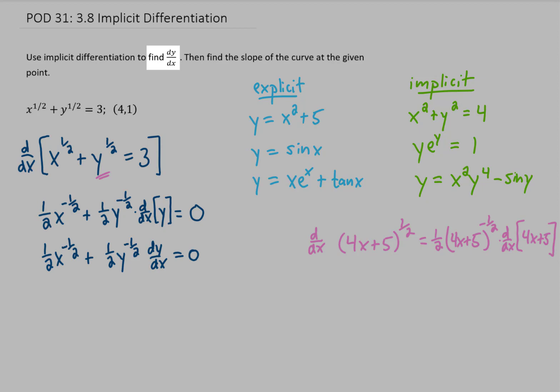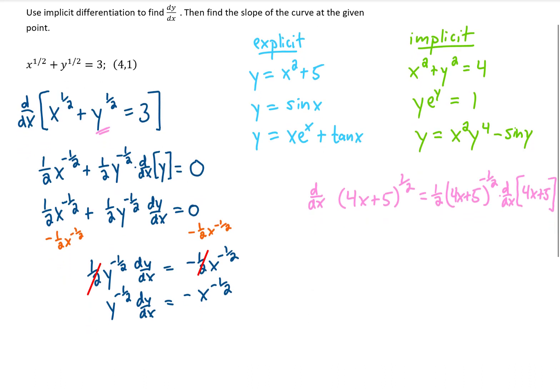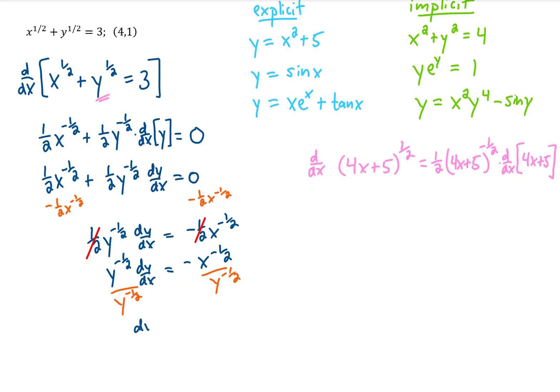Well, now if we want to find dy/dx, we can just isolate it algebraically. That means first subtracting 1/2 x to the negative 1/2 from both sides of the equation. The 1/2s cancel from either side. And finally, we can divide both sides of the equation by y to the negative 1/2 power. That gives us dy/dx by itself on one side of the equation.